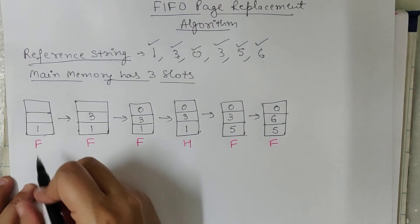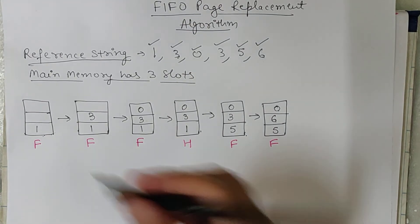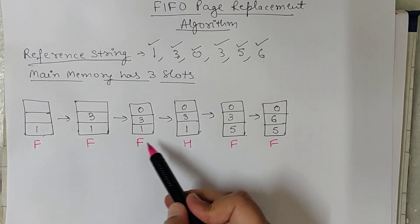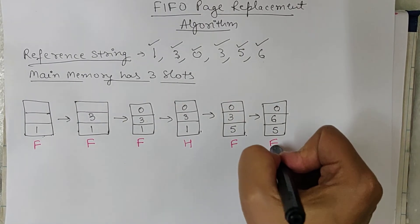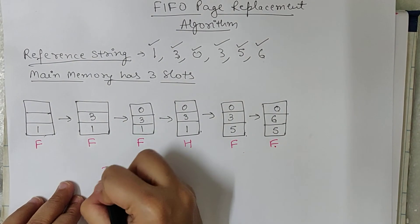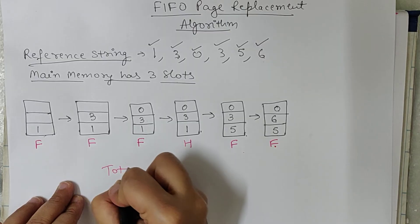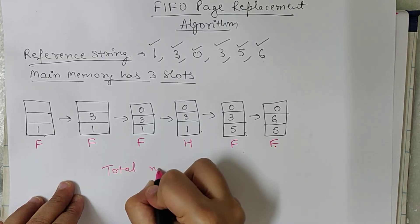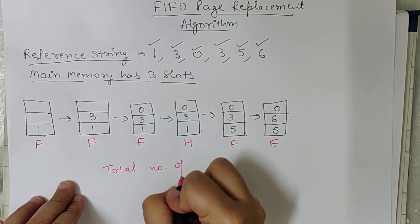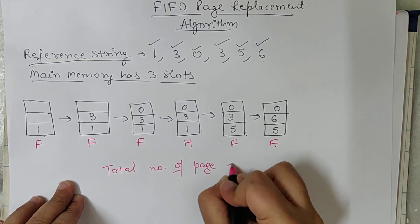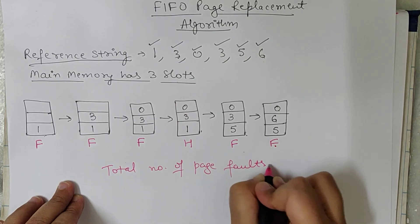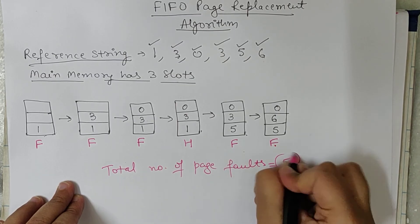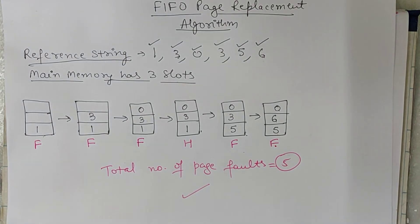Now we calculate the total number of page faults: 1, 2, 3, 4, 5. So the total number of page faults is equal to 5. This is FIFO — First In, First Out.